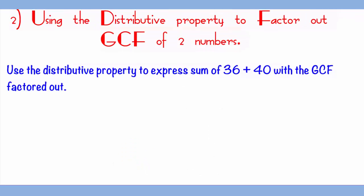Now, how do we use the distributive property to express the sum of 36 and 40? In the example, you first use the division method to find out the greatest common factor of 36 and 40, which in this case will be 4.